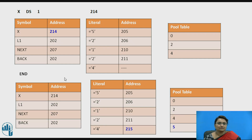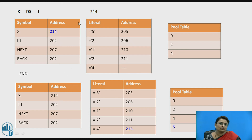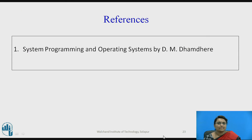After the END statement, the remaining literals still have to be processed. We know the fourth pointer is already set, so the literal at the fourth position is allocated after the END statement. The current location counter value after the declaration statement is 215, so that literal is allocated accordingly. This is the working of the two-pass assembler. Thank you.